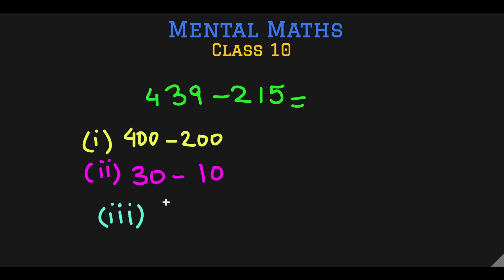439 has nine ones and 215 has five ones. Now because we have converted our question into three easier subtraction questions, we are just going to do them separately and add the result together. 400 minus 200 equals 200. 30 minus 10 is 20 and 9 minus 5 is 4, so our final answer by adding these answers is 224.